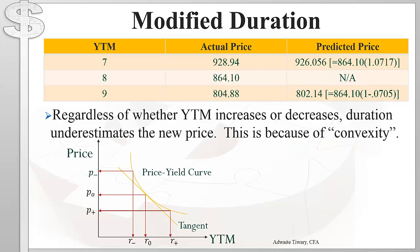Let's look at an example. The current yield is 8% and we know the current bond price. If the yield goes down to 7%, we can compute the actual bond price — and we can also predict the price using modified duration. It turns out the actual bond price is greater than the predicted price. Similarly, if the yield goes up to 9%, the actual bond price again turns out to be greater than the predicted price.